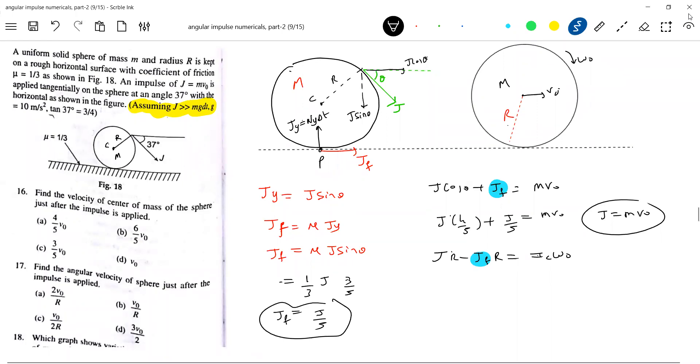Next again, J into r, Jf is J by 5 r. This is a solid sphere, so 2 by 5 m r square omega naught. J, 4J by 5. 5 gets eliminated. So J equal to m r omega naught by 2. This is equation 1, equation 2.